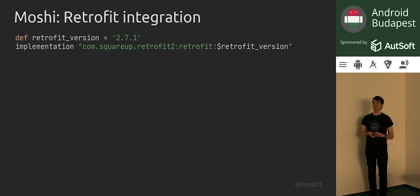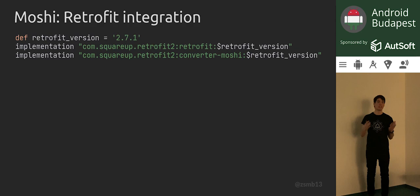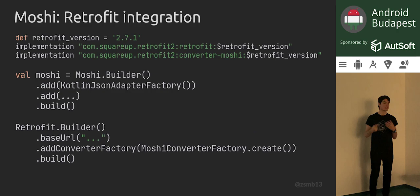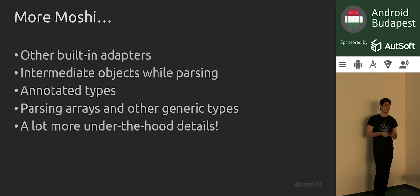We are talking Android things mostly here, although Moshi works on any JVM project. Let's look at how it integrates with Retrofit. Retrofit, being in the same family of libraries, has a dependency for a Moshi-based converter. All you have to do is add a converter factory to your Retrofit builder. If you want to customize the Moshi instance used, you can build your Moshi instance and then pass it into the create method of the factory.